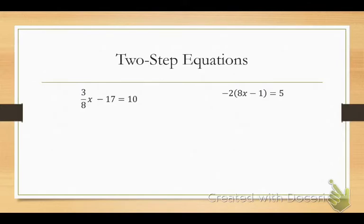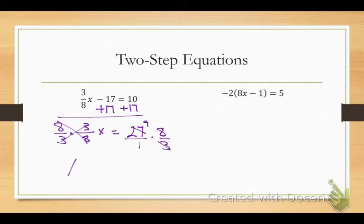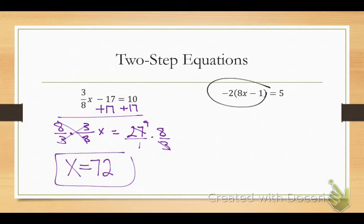What do I do first on the first equation? Add 17. Very good. Add 17 to both sides, and I get 27. You need to rewrite the equation. Now what do you do to get x by itself? Multiply by 8 over 3. That cancels out the fraction. Now multiply the other side by 8 over 3. Your answer is 72. Who got 72?